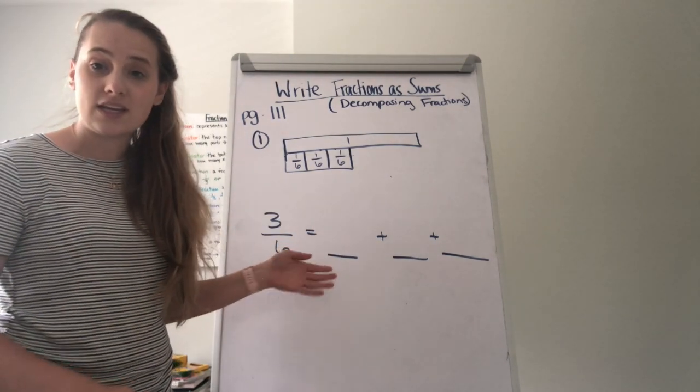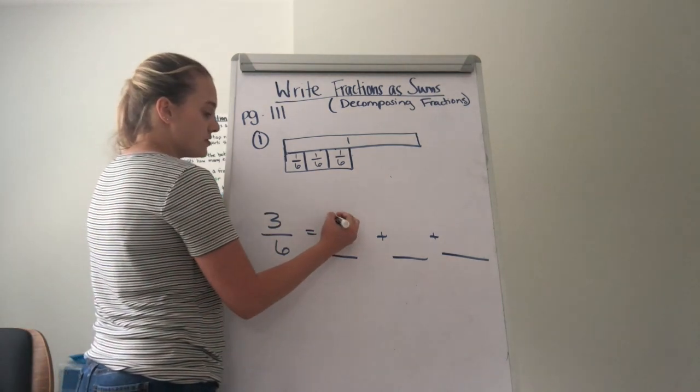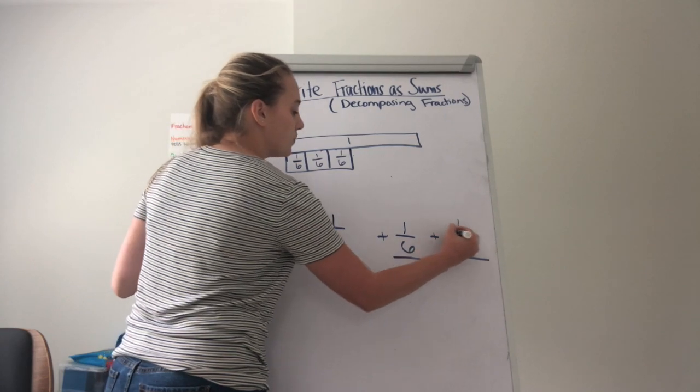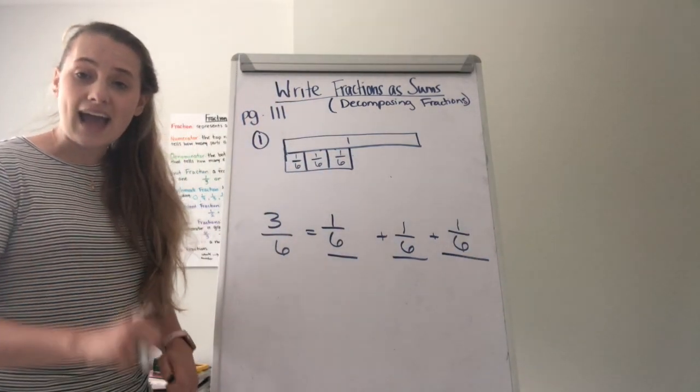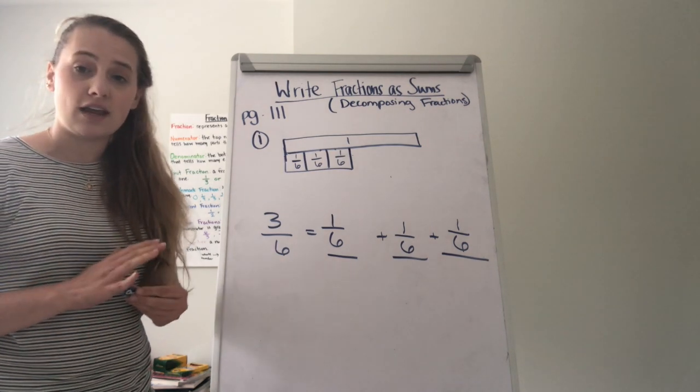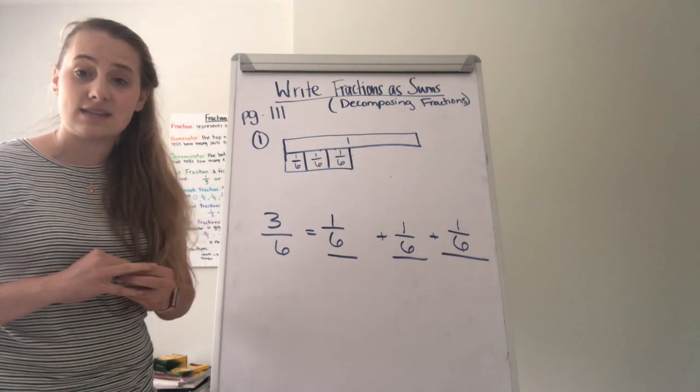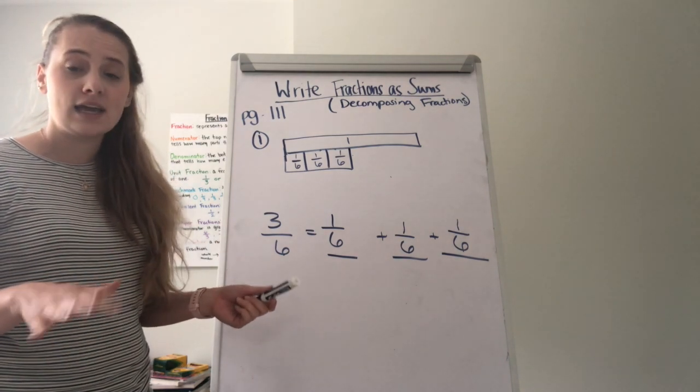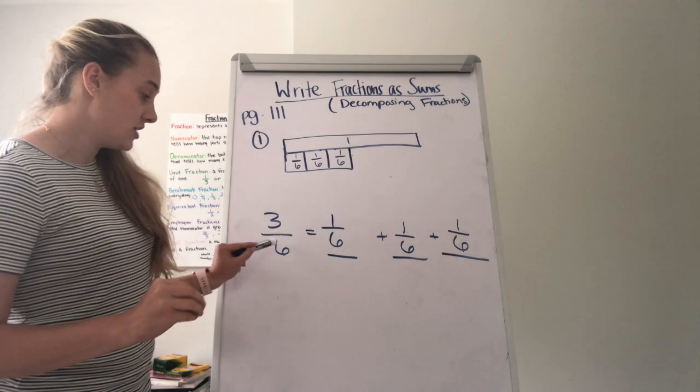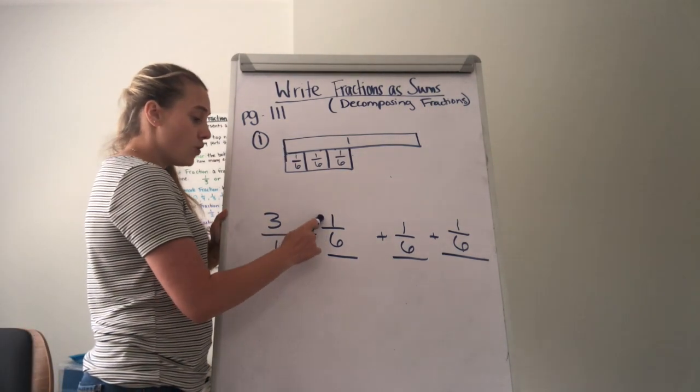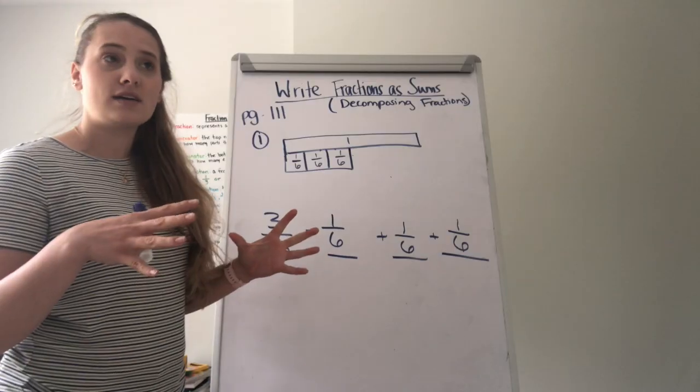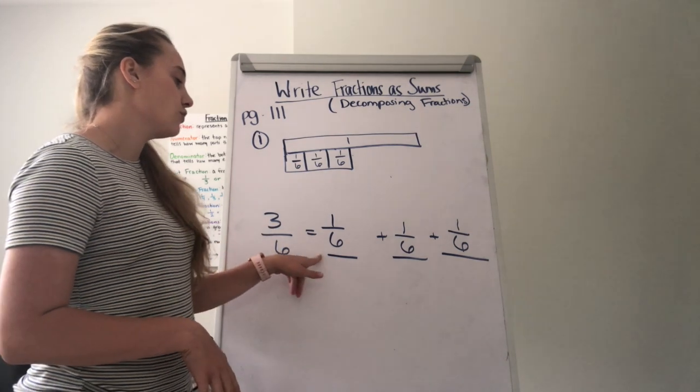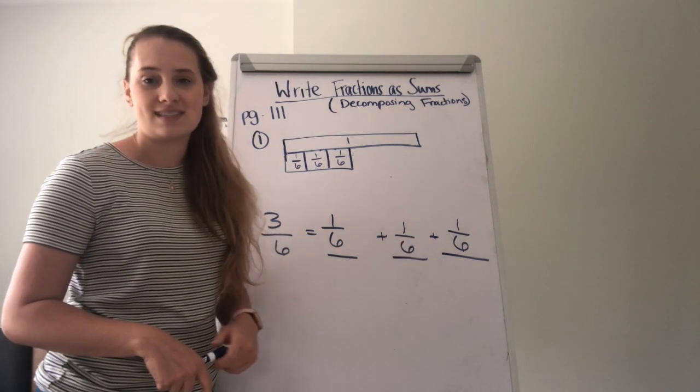Well, our model right here tells us 3/6 equals 1/6 plus 1/6 plus 1/6. Because remember, when we are adding, we do not change the denominator. The denominator always stays the same and that is something that is very important for you to understand. When you are adding or subtracting a fraction, do not change that denominator. So in this case, 1/6 plus 1/6 plus 1/6 is us decomposing 3/6. So 3/6 is equal to 1/6 plus 1/6 plus 1/6.